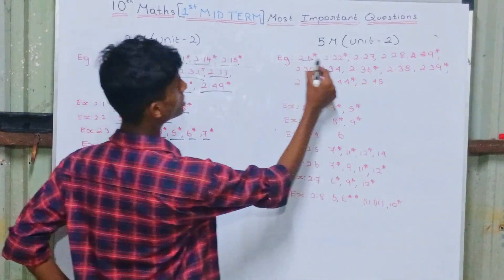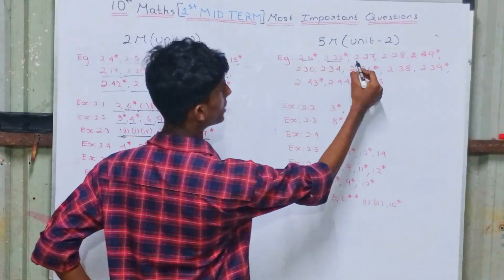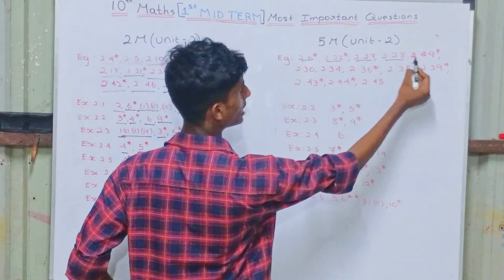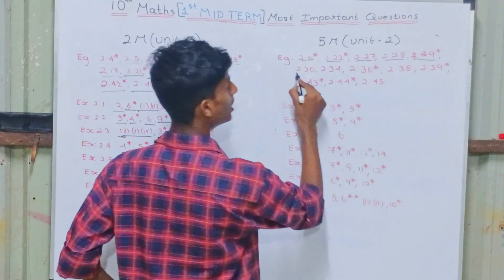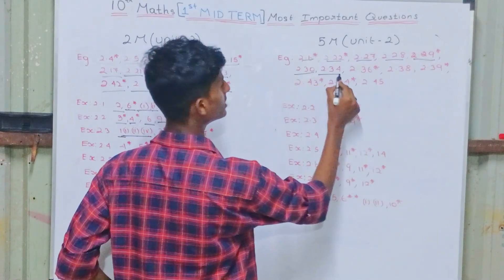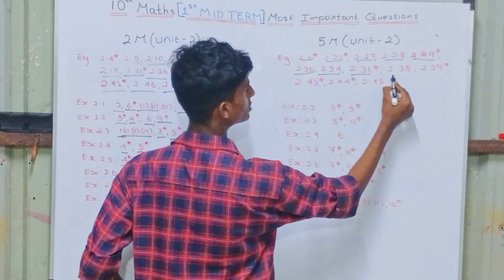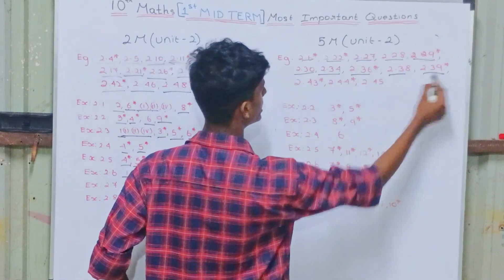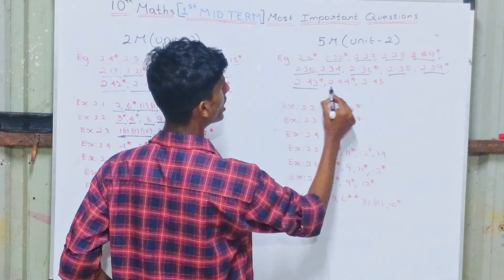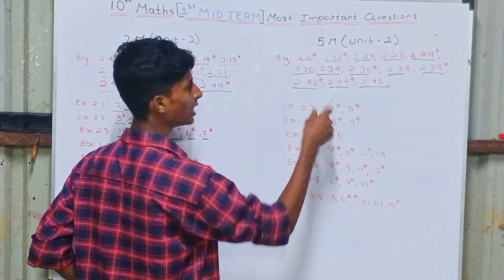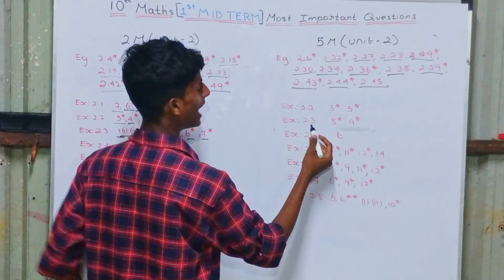For five marks: Examples 2.6, 2.22, 2.27, 2.28, 2.29, 2.30, 2.34, 2.36, 2.38, 2.39, 2.43, 2.44, 2.45 — these are very important five-mark questions.